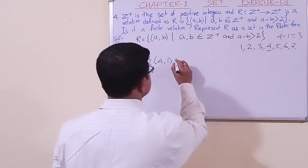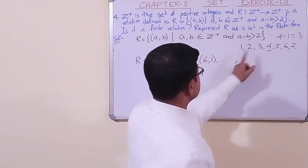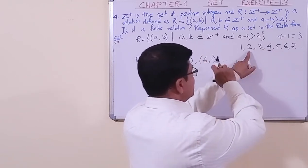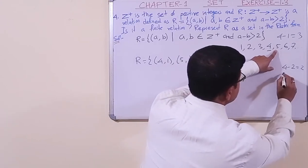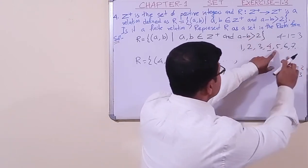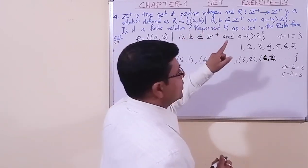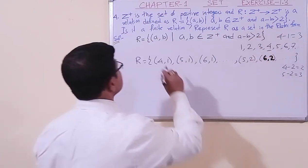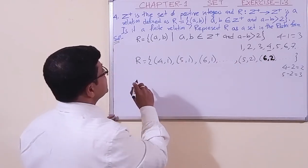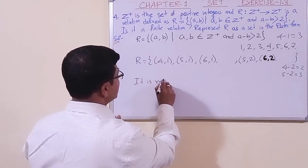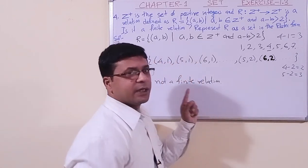So we can write (5,1), (5,2), because 5 minus 2 is 3 which is greater than 2. Representing R as a set in roster form: R = {(4,1), (5,1), (5,2), (6,1), (6,2), (6,3), ...}. Is it a finite relation? It is not a finite relation — in fact it is an infinite relation.